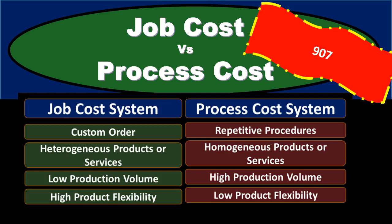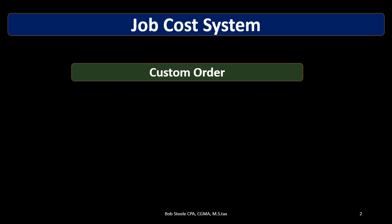In this presentation we will compare a job cost and process cost system. When we produce inventory as a manufacturing company, we typically use either a job cost system or a process cost system. The difference between the two — which one we use — will typically depend on the type of inventory that we produce.